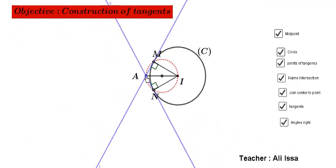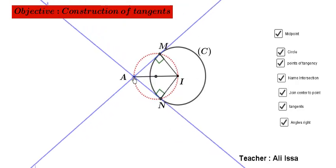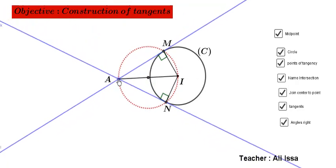Now, observe if A is far from the center of the circle C, if A is far from I, if A is far from the center I, we still have two tangents.